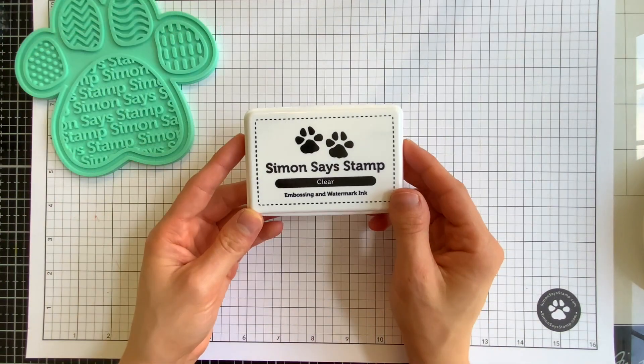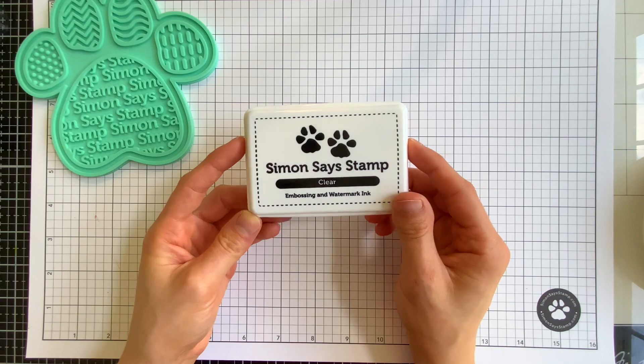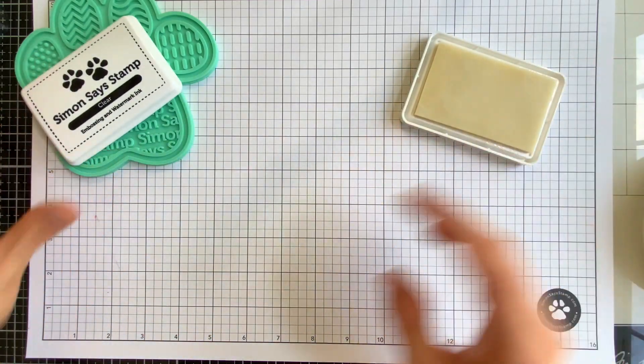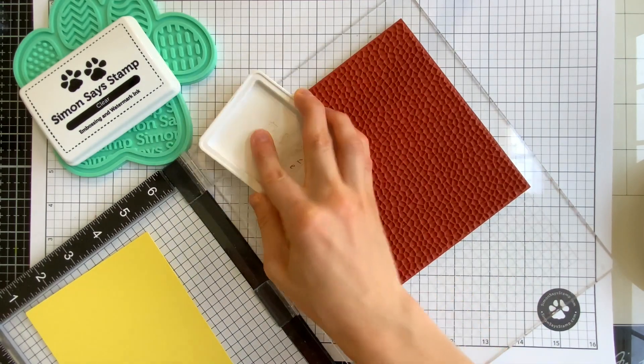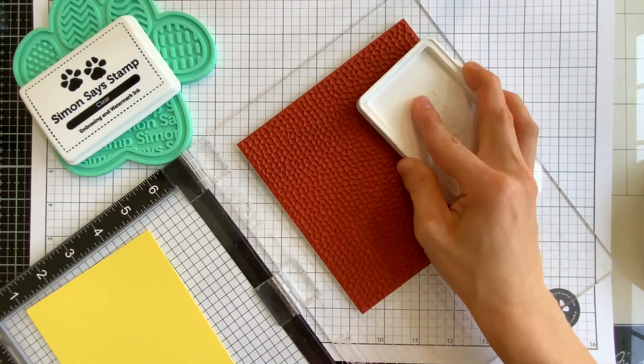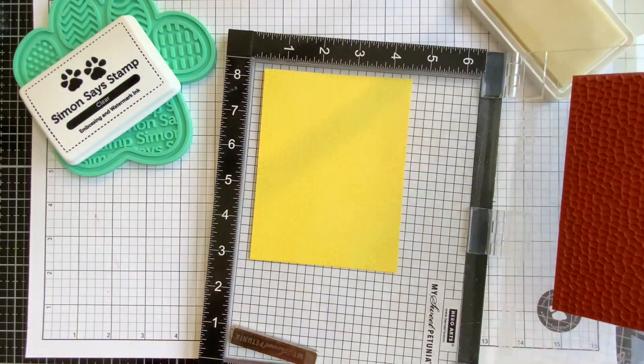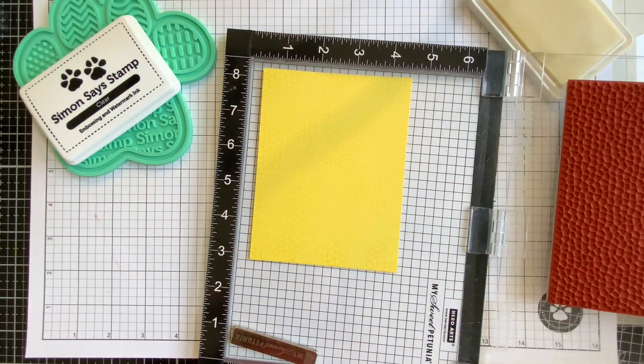Whether you use it as a watermark ink for subtle stamping or as a sticky ink for heat embossing, I guarantee you you're going to reach for our exclusive Simon Says Stamp embossing ink pad all the time. The ink dries slowly which gives you plenty of time to add embossing powder and heat set it with a heat tool.